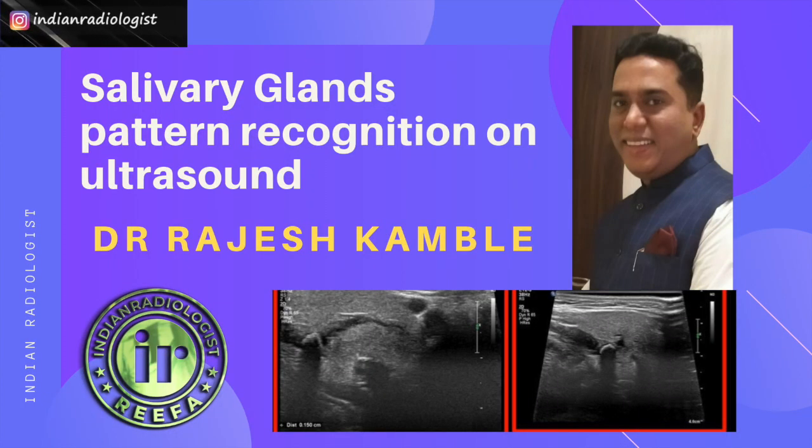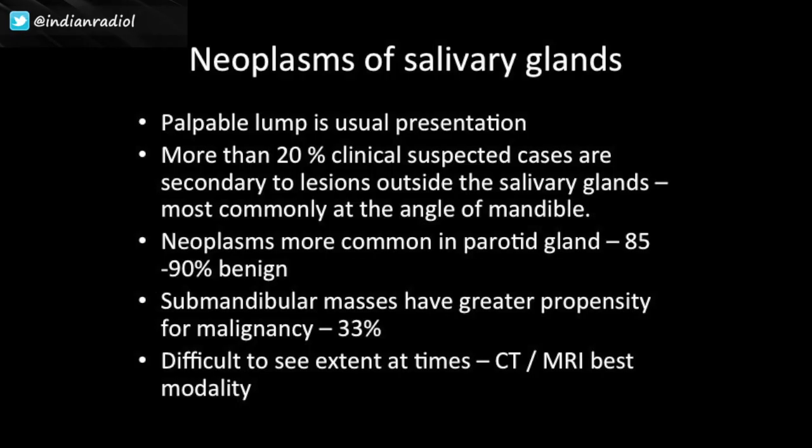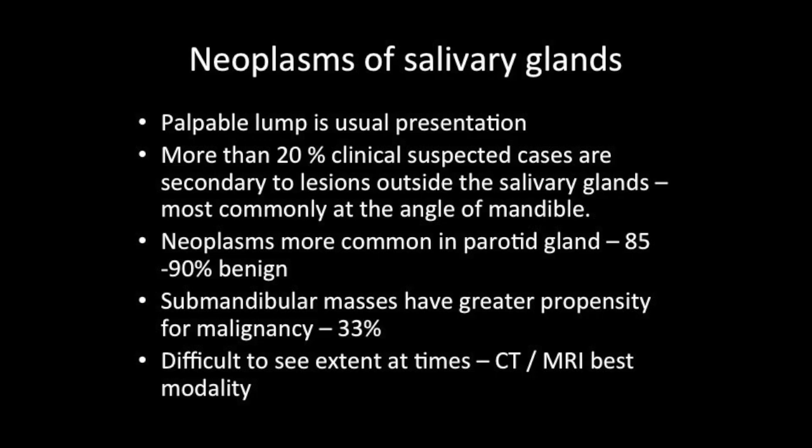Coming to day-to-day practice scenarios of neoplasms of the salivary gland — they can be benign or malignant. Commonly, neoplasms are most common in the parotid and most of them are benign. When you come to submandibular glands, the lesions are very highly associated with malignancies. So for parotid, benign pathology should be first on your mind, and for submandibular, think malignancies.